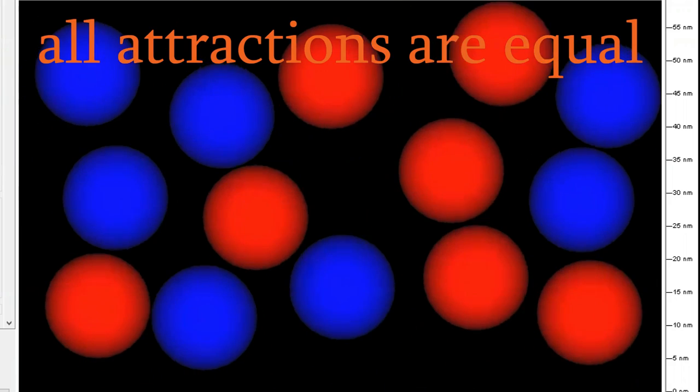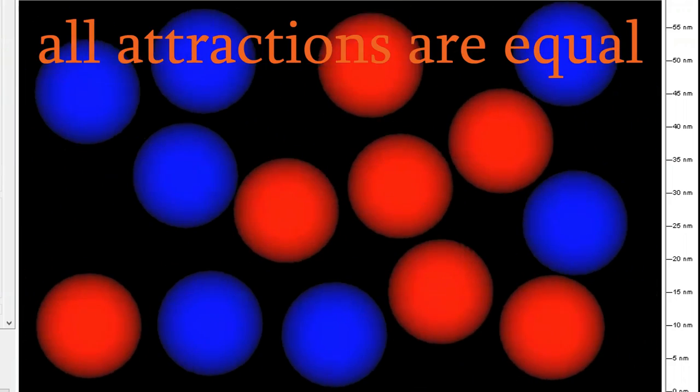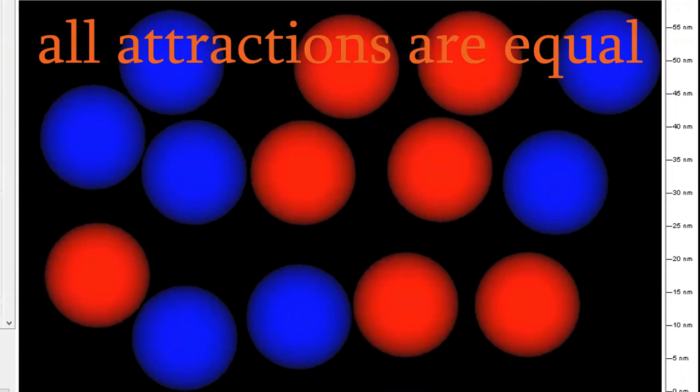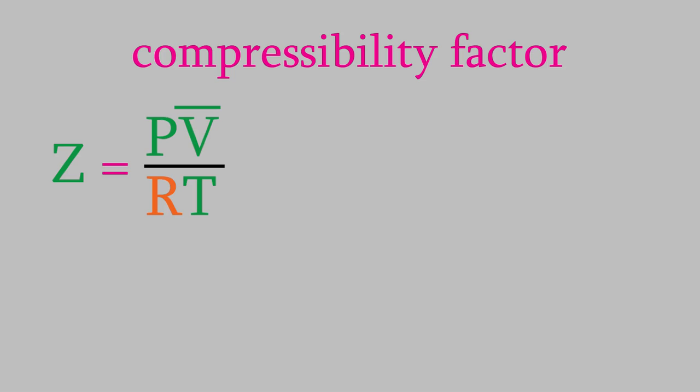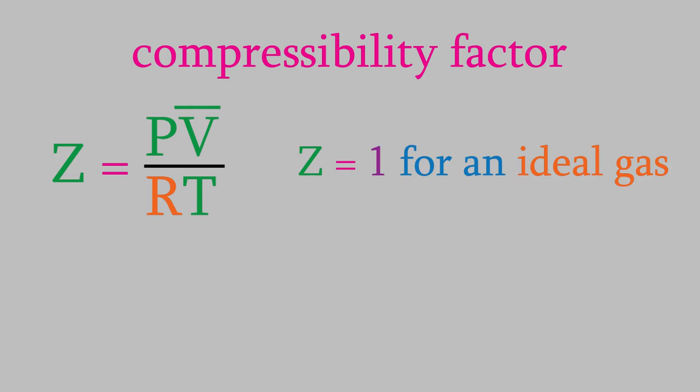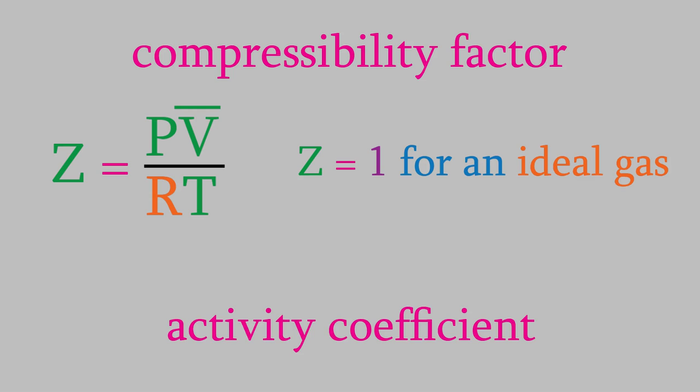Back when we talked about ideal gases in video 9, we saw that we can describe how close to ideal a gas is by looking at Z, the compressibility factor, which was given by this equation. We saw that for an ideal gas, Z is equal to 1. There's a similar property that we can calculate for solutions, and it's called the activity coefficient. But in order to talk about the activity coefficient, we first need to know about a property called the activity.